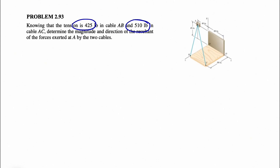To show the tension in each of the two cables, we have the tension in cable AB — we'll call it TAB — and the tension in cable AC — we'll call it TAC. Before we do anything, we need to find each of these two tensions in vector form, and in order to do that, we need the unit vector for each. Let's start with TAB.